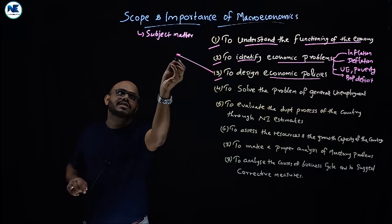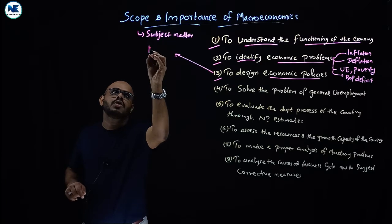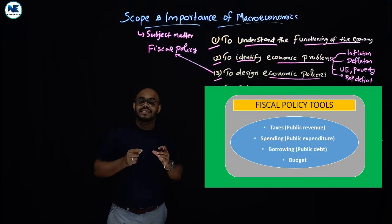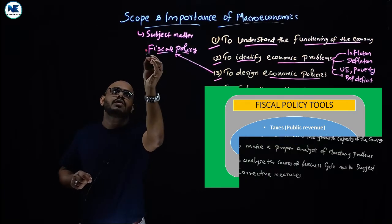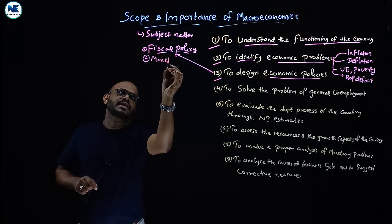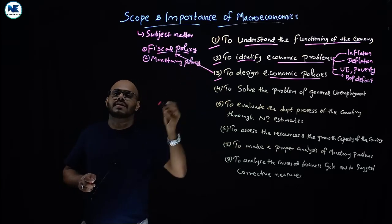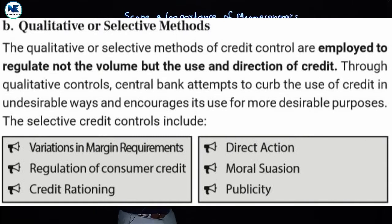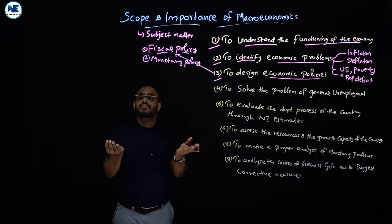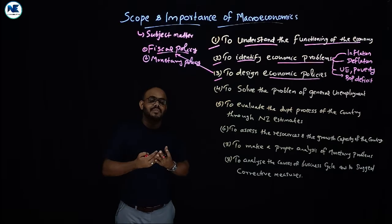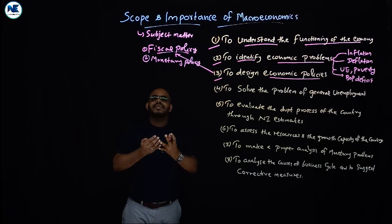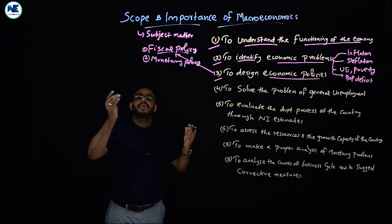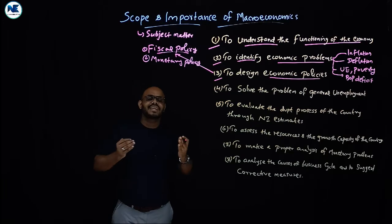The third point is to design economic policies. These include fiscal policy — the government's tax actions, public expenditure, budget deficit financing, and public borrowing — and monetary policy implemented by the RBI through tools such as repo rate, reverse repo rate, bank rate, SLR, open market operations, and qualitative credit control techniques. Economic policies are designed to solve macroeconomic problems and improve the living standards of the people.